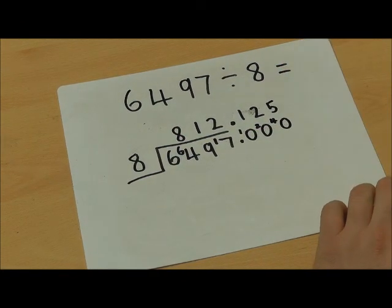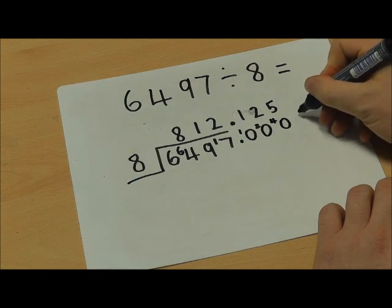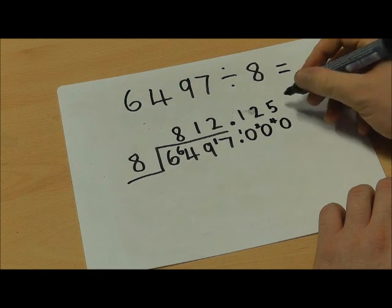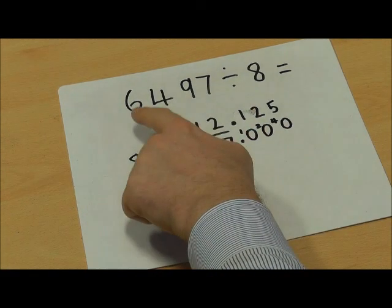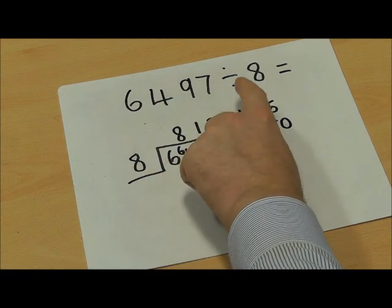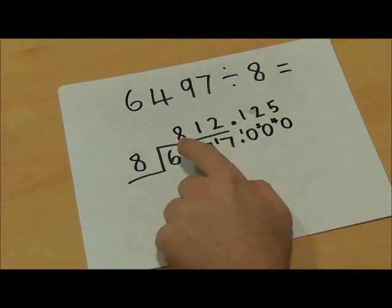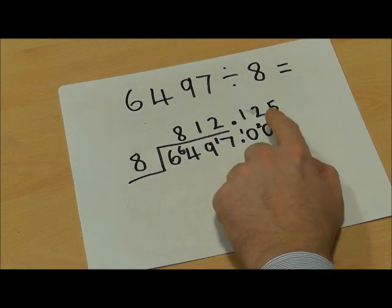Because I don't have any left over, I don't need to add another 0 and then put the remainder, because I have done the sum exactly. So I now know, rather than having a remainder, that 6497 divided by 8 equals 812.125.